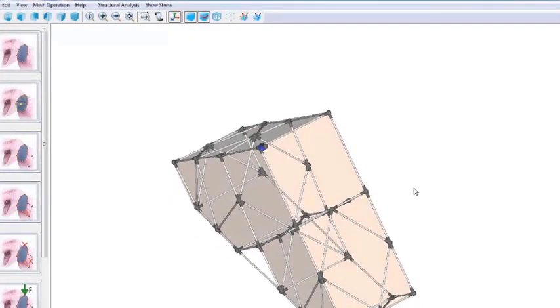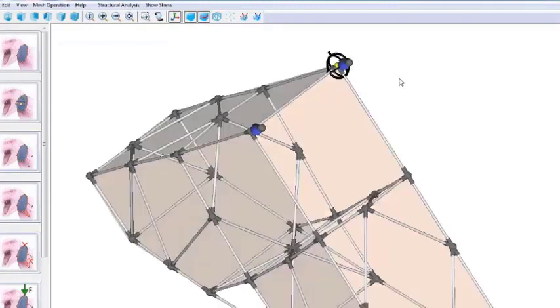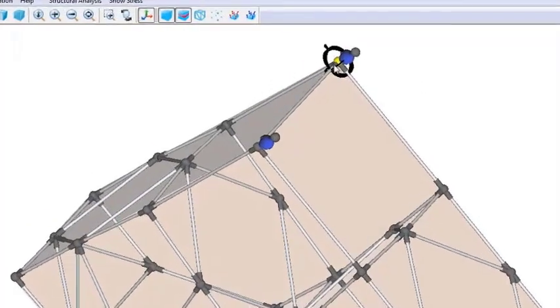Additionally, the user can choose to use articulation joints such as the ball joints shown here. The orientation can be easily manipulated.